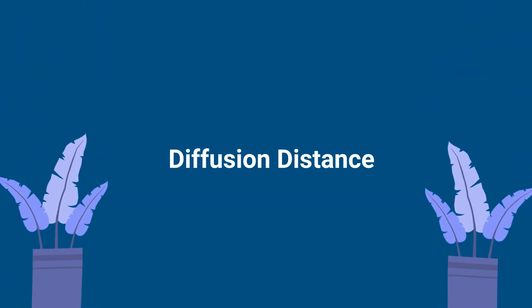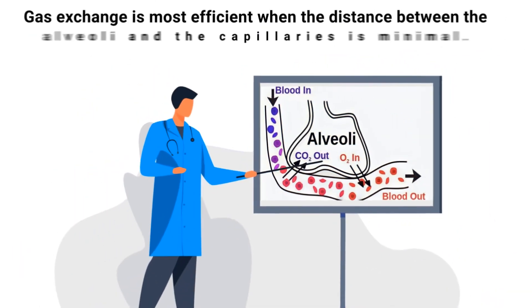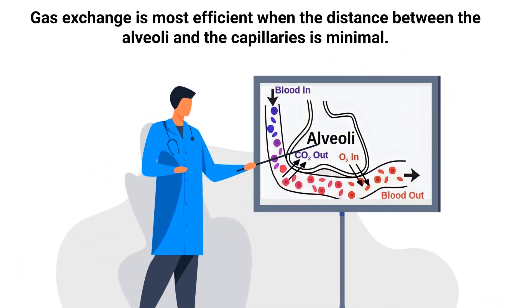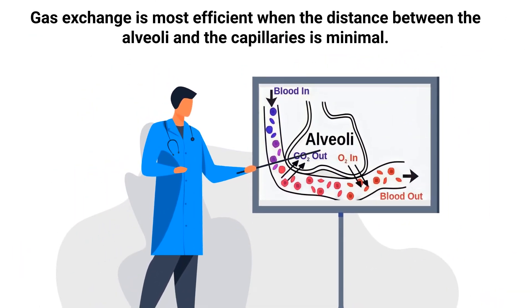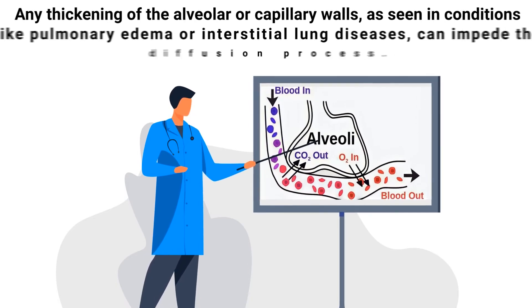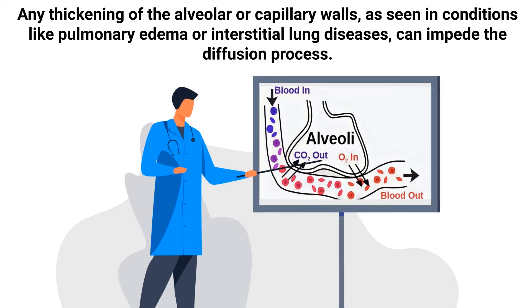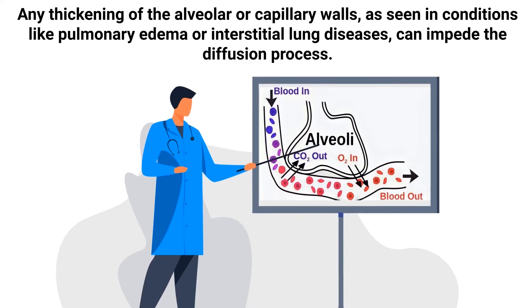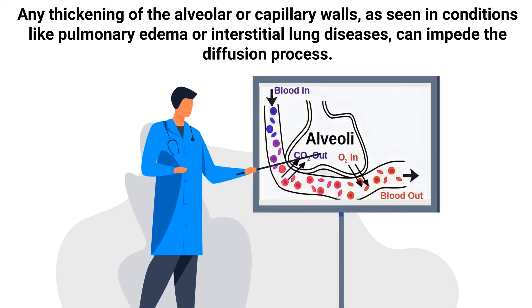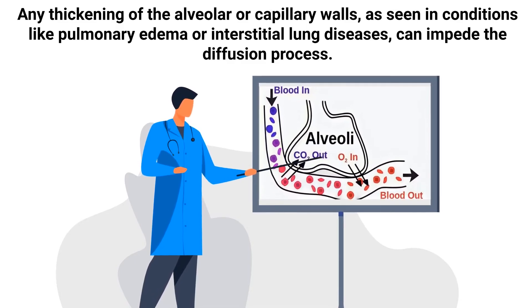Next is diffusion distance. Gas exchange is most efficient when the distance between the alveoli and the capillaries is minimal. Any thickening of the alveolar or capillary walls, as seen in conditions like pulmonary edema or interstitial lung diseases, can impede the diffusion process.